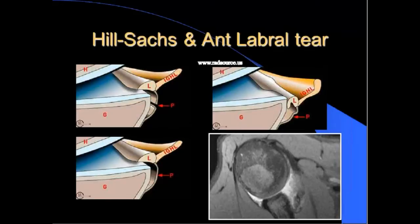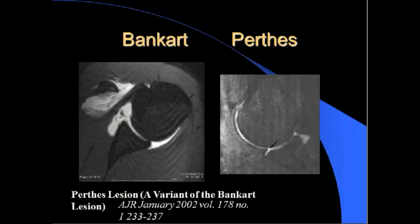In a typical Bankart lesion, the labrum is standing alone with no periosteal attachment. Perthes lesions can be difficult to diagnose even on MR arthrogram images without labral displacement in neutral position. The ABER image - abduction external rotation with the patient's hands under the head - forces fluid under the detached anterior labrum, demonstrating undercutting of the anterior labrum.